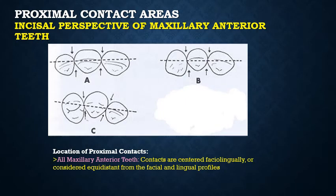From the incisal or occlusal perspective, the proximal contact areas of maxillary anterior teeth are located in the center faciolingually. If we bisect the facial-lingual dimension, the contact area falls at the center. They are equidistant whether viewed from the facial or lingual aspect.